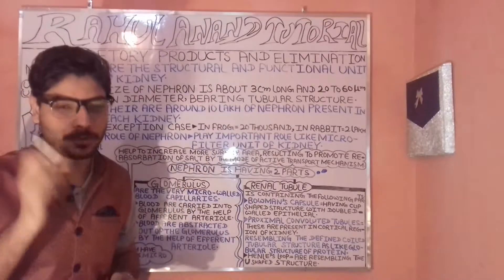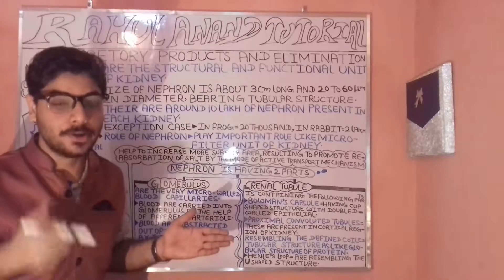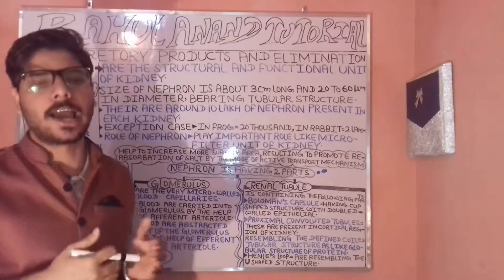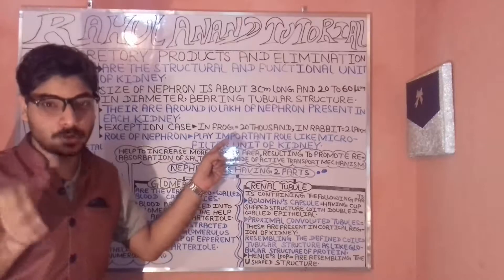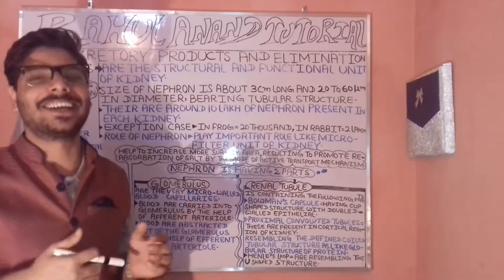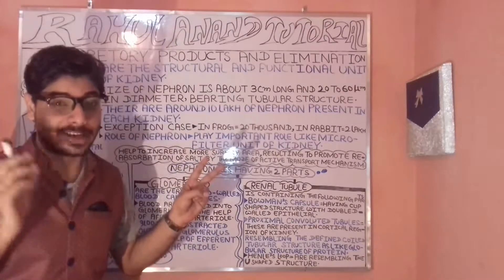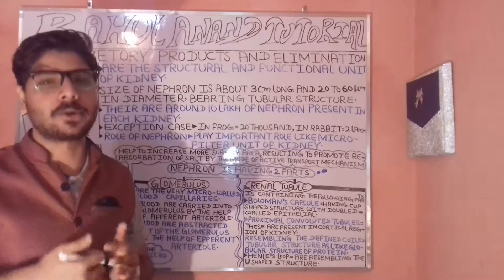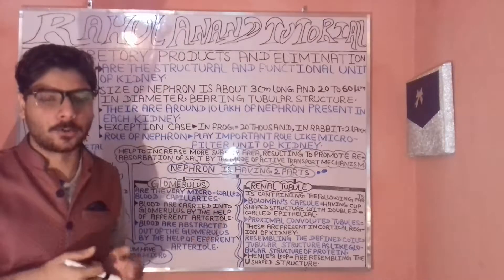When we talk about nephrons, the primary fact to understand is that these are the structural and functional units of the kidney. The kidney is a bean-shaped structure with certain distinct parts.